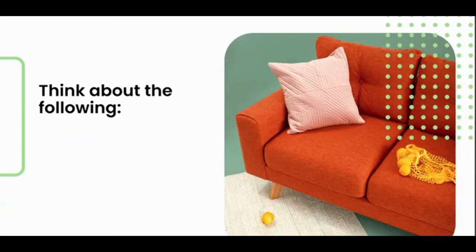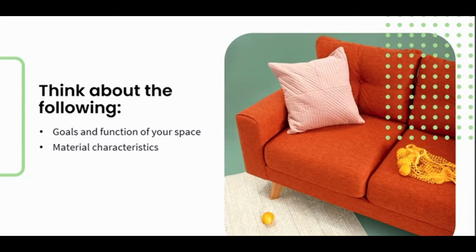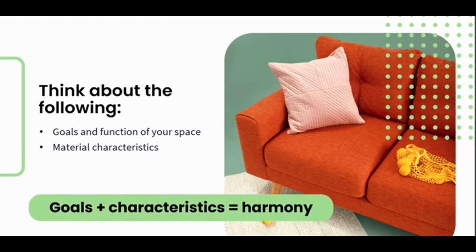Let's take a step back and look at the fabric selection process. When selecting fabrics for your project installation, much like any other aspect of interior design, you should always keep the following in mind: the functionality and goals of the space, and the characteristics and properties of the material. These elements need to harmonize — your elements need to be matched with your functions and goals. In essence, the characteristics of the materials need to harmonize with the function of the space.